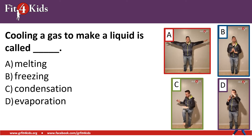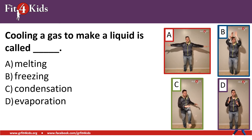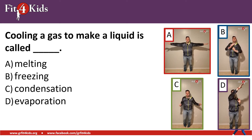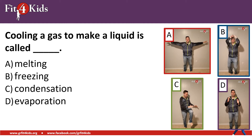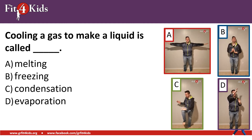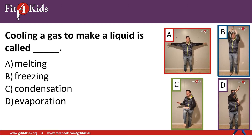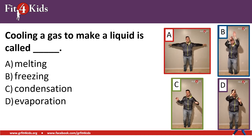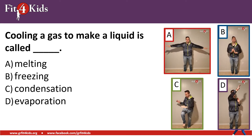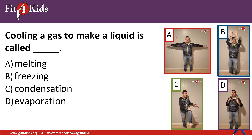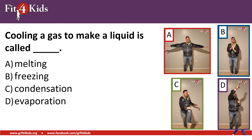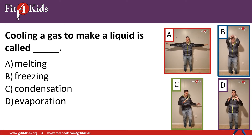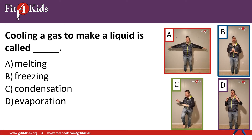Cooling a gas to make a liquid is called blank. A, melting; B, freezing; C, condensation; D, evaporation. The correct answer is C, condensation — cross crawls. When you cool a gas to make a liquid, you're condensing that gas into a liquid.